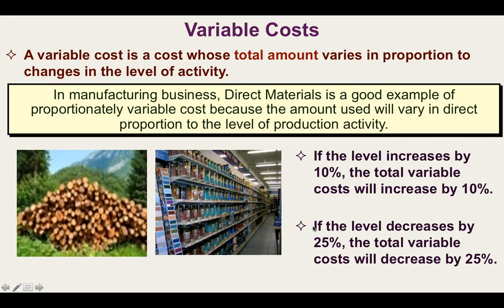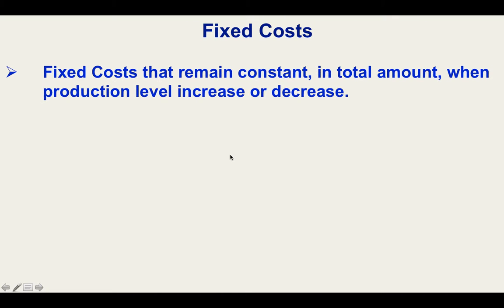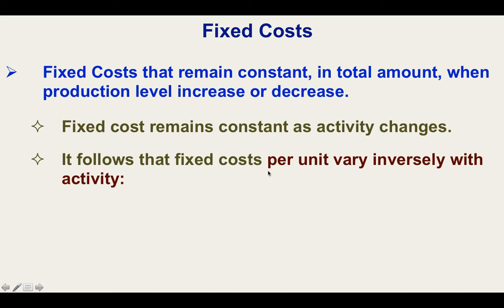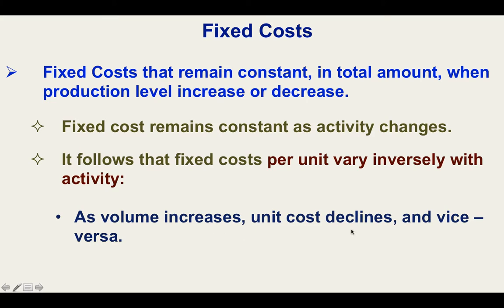If the level decreases by 25%, then the total variable cost will likewise decrease by 25%. Fixed cost remains constant in total amount even when the level of production increases or decreases. Fixed cost remains constant even as activity changes. It follows that fixed cost per unit varies inversely with activity — unit cost decreases if activity increases. As volume increases, unit cost declines, and vice versa.